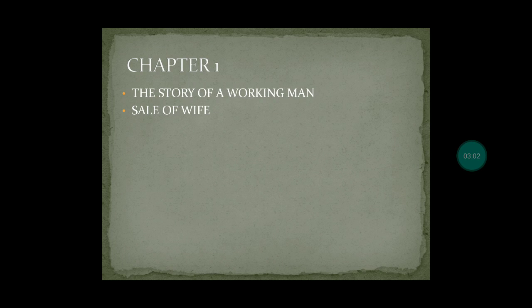Michael Henchard is trying out his luck everywhere. He is out of a job and looking for some kind of work. If I can read the first paragraph of the novel, it goes like this: 'One evening of late summer, before the 19th century had reached one third of its span, a young man and a woman, the latter carrying a child, were approaching the large village of Waden Priors in Upper Wessex on foot. They were plainly but not ill-clad, though the thick coat of dust which had accumulated on their shoes and garments from an obviously long journey lent a disadvantageous shabbiness to their appearance just now.' This is how the novel opens.